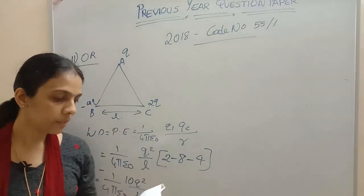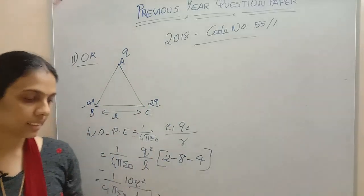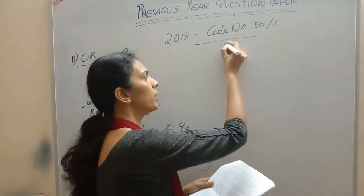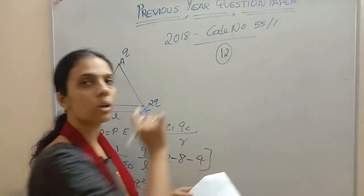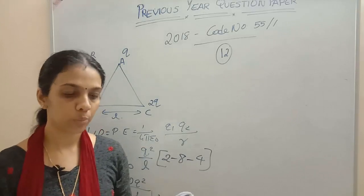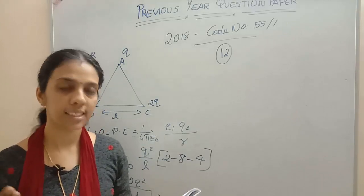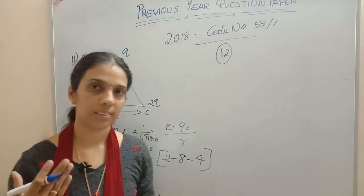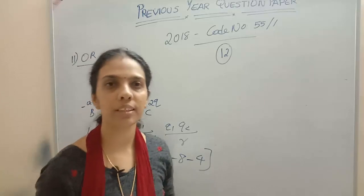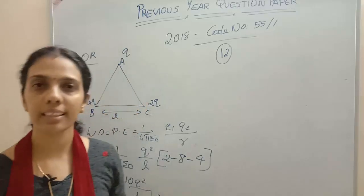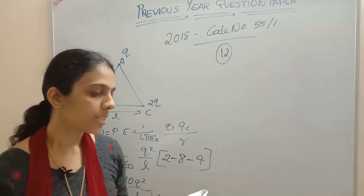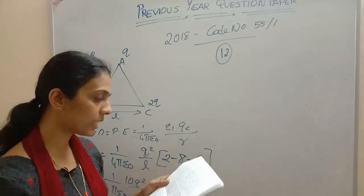So that is how we find the potential energy of the system. For derivations, I won't be proving them here — I will be covering the 1 mark and 2 mark questions, since the derivations are already in the textbook. Next, the 12th question.